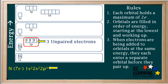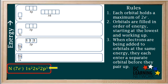Single electrons in orbitals are called unpaired electrons. You can see that a nitrogen atom has three unpaired electrons. Unpaired electrons are important in forming covalent bonds, which we'll examine in a later section of this course. The electron configuration of nitrogen is 1s², 2s², 2p³.